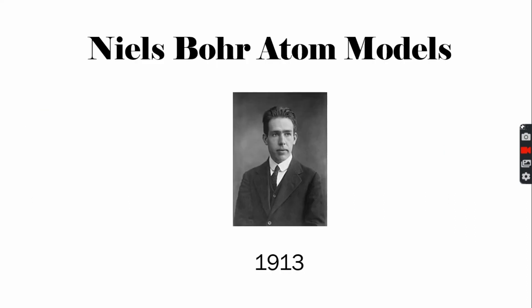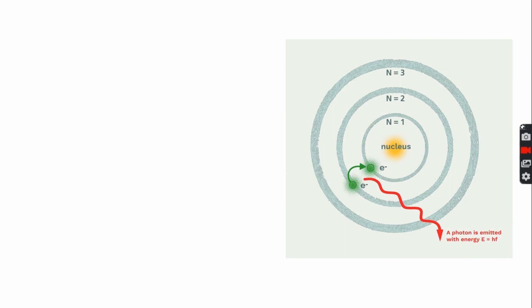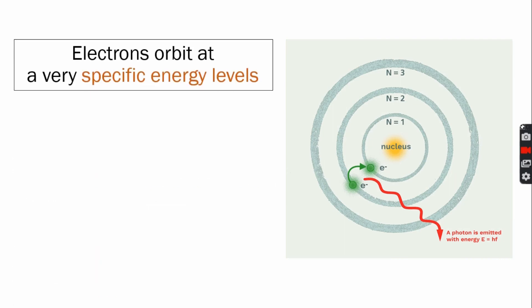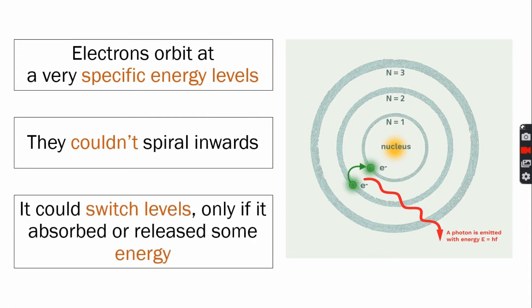The answer was proposed by Danish scientist Niels Bohr in 1913. He proposed an adjustment to the Rutherford model that solved this problem. Bohr's model predicted that electrons orbit at very specific energy levels, which he called orbits. The electrons could only orbit at precisely those levels, and so they couldn't spiral inwards. An electron could switch levels, only if it absorbed or released some energy. That explained why stable atoms didn't just collapse. Bohr's model quickly became the most popular model of an atom, and it's often used today to show the basic way that an atom is arranged.